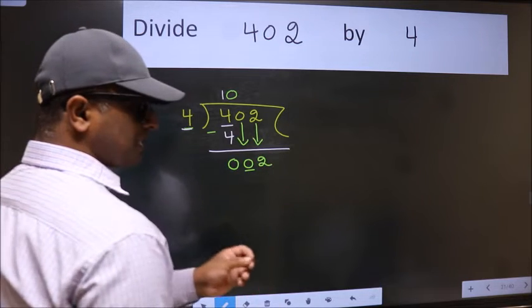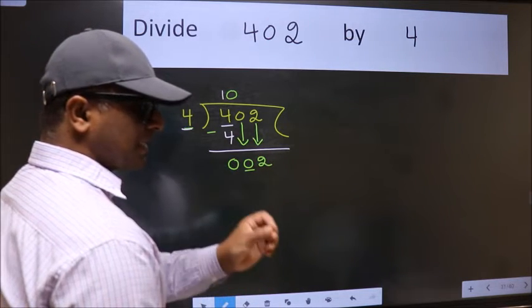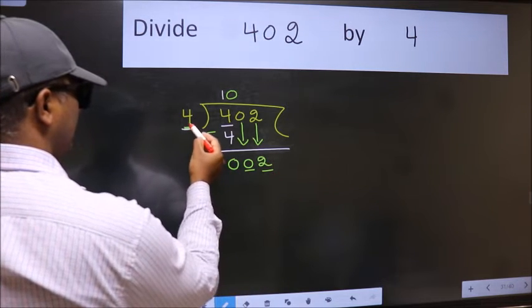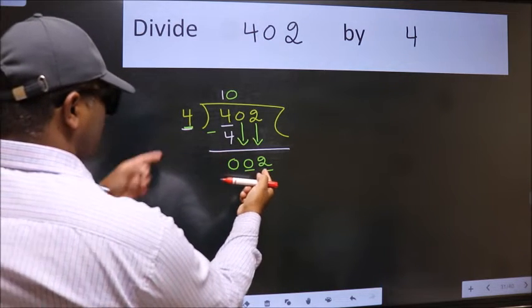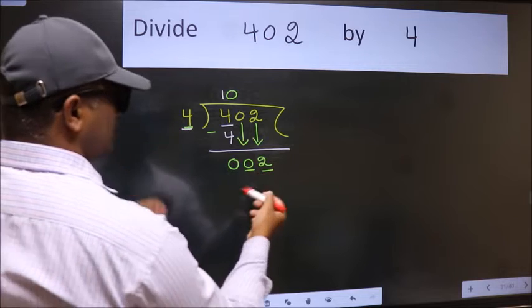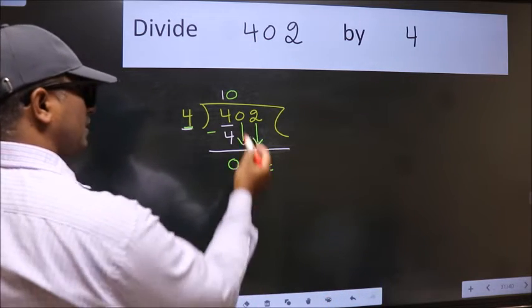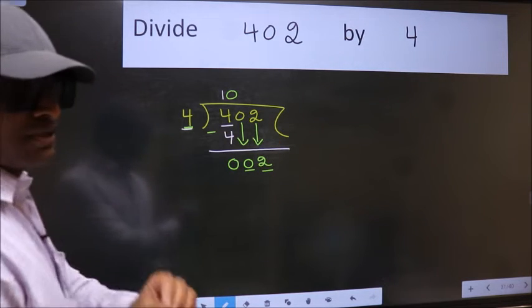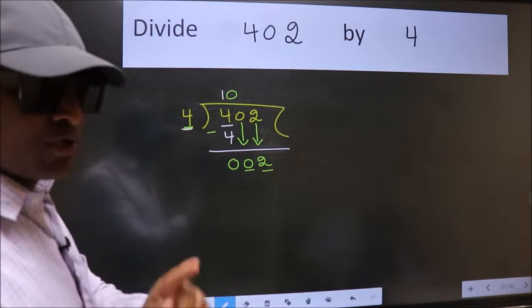After this step, the mistake happens. And the mistake is this: here we have 2 and here 4. 2 is smaller than 4. So what many do is they directly put dot take 0, which is wrong.